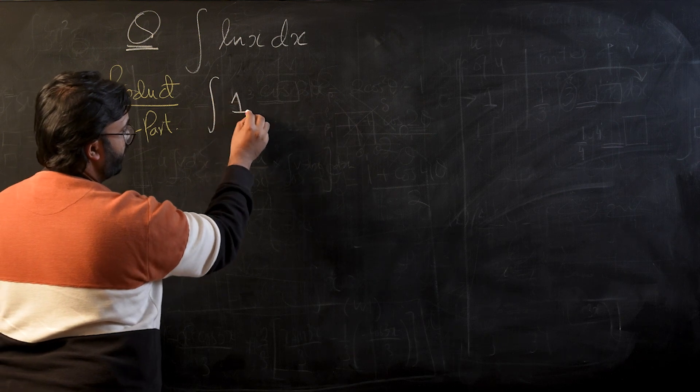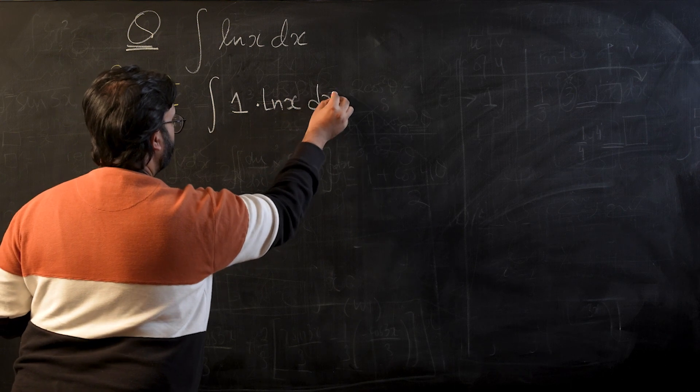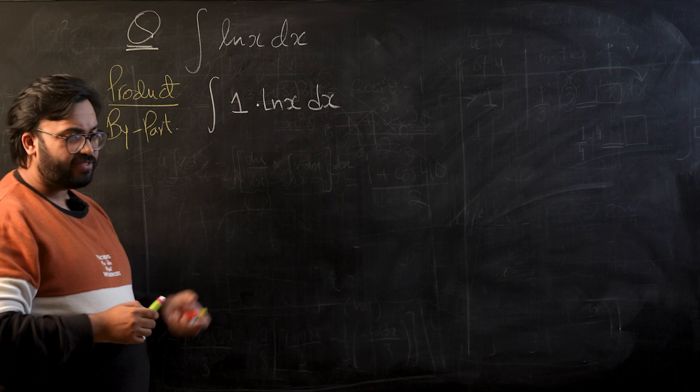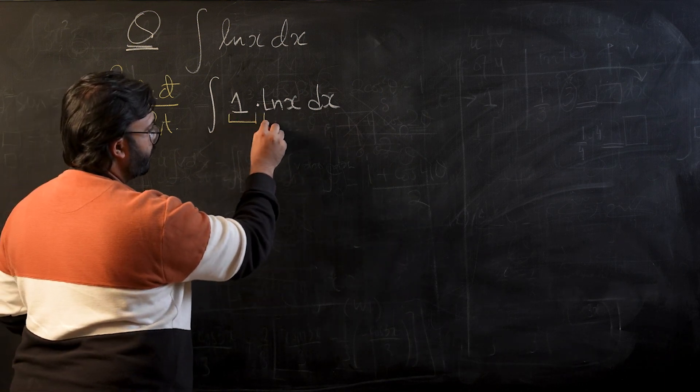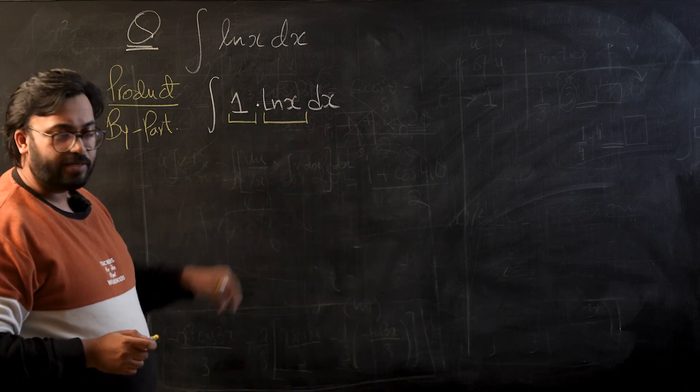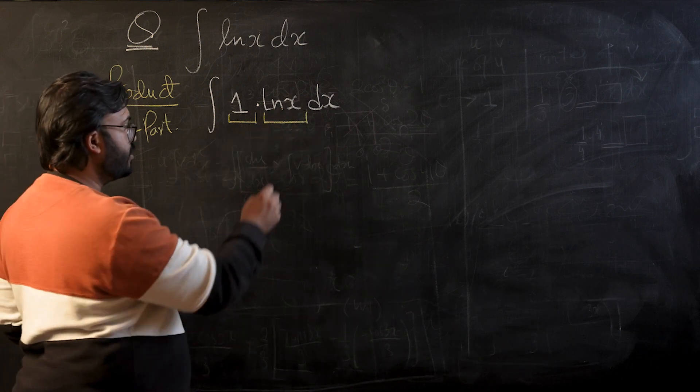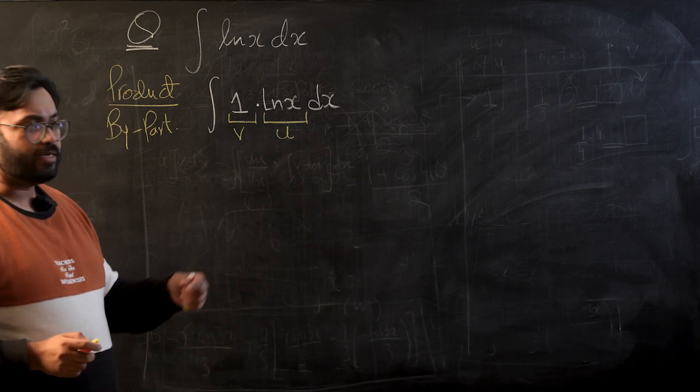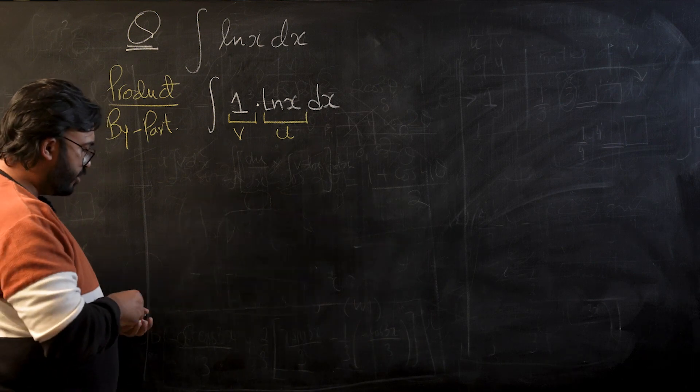So what I'm going to do is multiply one with this ln term and convert it into a product between two things. Once we have the product, let's take u and v. For those of you who have already understood the basic idea for integration by parts, you would know that we always take logarithmic terms as u and that is compulsory. And as a consequence of that, we have to take the other term as v.